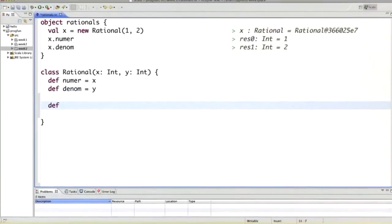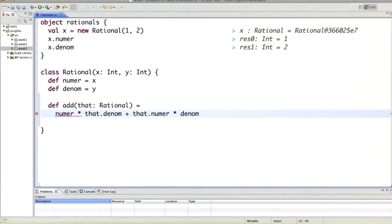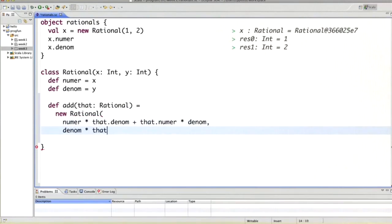Let's do this in the worksheet. Let's define an addition function add. Add takes one rational as its argument and it would then produce the numerator times the argument's denominator plus the argument's numerator times its own denominator. That's the numerator of the new rational. And its denominator would be just the two denominators multiplied.